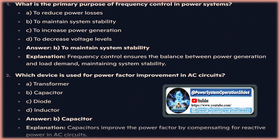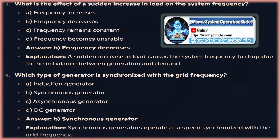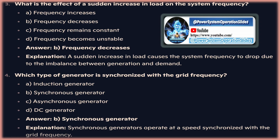Secondary control: once the primary regulation has accomplished its target, the frequency value is different from the nominal one. The reserve margins of each generator have been used or partially used, and also the power exchange between the interconnected power systems is different from the predefined one. So, it's necessary to restore the nominal value of the frequency, the reserve of each generator previously used, and the power exchange among the power systems. This is the purpose of the secondary control. In order to perform this task, there are some generators entitled to perform the secondary control through a dedicated reserve power. This reserve depends on the requirement of each TSO, and usually it's a percentage of the maximum power available, with a predefined minimum value.